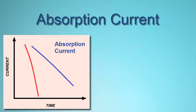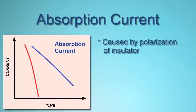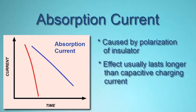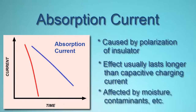Absorption current, also called polarization absorption current, is caused by the insulating material becoming polarized by the electricity flowing through the conductor. As the polarization level increases, the absorption current decreases. This gradual change reflects the storage of potential energy in and along the insulation. As a result, resistance is initially lower and then rises, producing a measurement profile similar to capacitive charging current but at a much lower rate. The effect can last several seconds up to a minute or more. The length of time it takes for absorption current to fall off can be affected by moisture or other contaminants in the insulation material. Therefore, absorption current is an important indicator of insulation integrity.